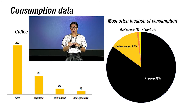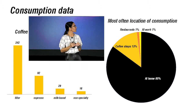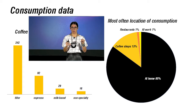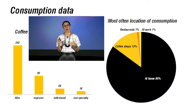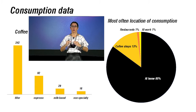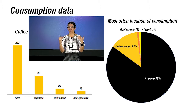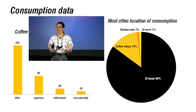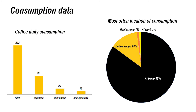When we asked participants about the most often location of consumption of specialty coffee — a single-choice question — 85% selected at home, followed by coffee shops, then restaurants and at work. We asked them to consider their usual coffee consumption and disregard the pandemic years. It is impressive that at-home consumption is the most often reported location for specialty coffee.